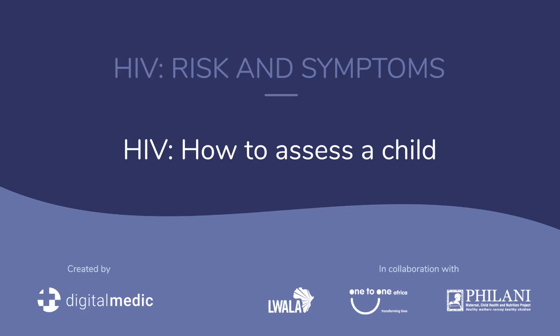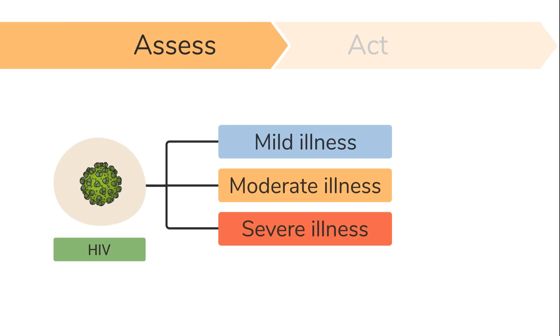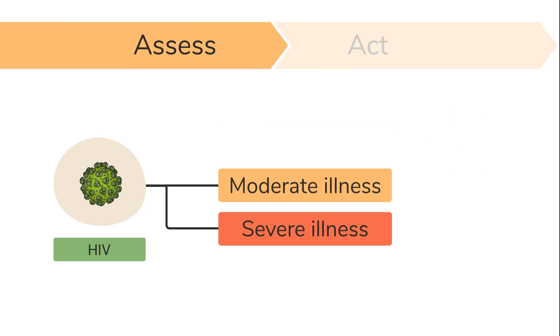HIV – How to Assess a Child. If a child is at risk of HIV or has signs and symptoms of HIV, this is not a mild illness that can be treated at home. You will assess the child to determine if they have a moderate or severe illness.